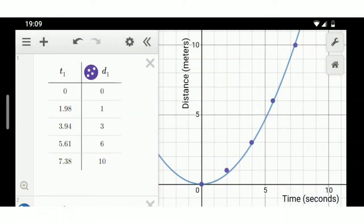As I did last week, the time is in the first column and the distance in the second column. So, time is on the x axis, distance is on the y axis. And you can see my times as they crossed each of those distance marks at 1, 3, 6 and 10 meters.